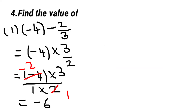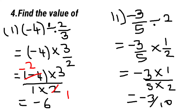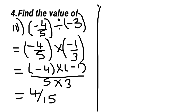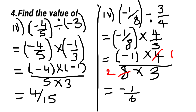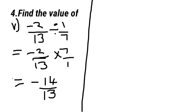Find the value. First sum: minus 4 divided by 2 by 3. Minus 4 multiply 3 by 2, we take the reciprocal and get the answer. Third sum: minus 4 by 5 divided by minus 3, equal to 4 by 15. Next: minus 1 by 8 divided by minus 3 by 4. That is reciprocal 4 by 3, we cancel and get the answer minus 1 by 6.